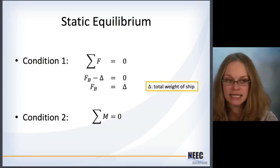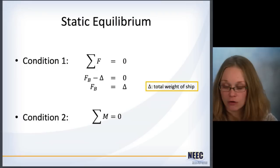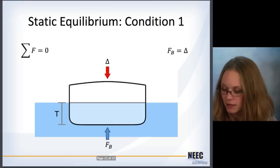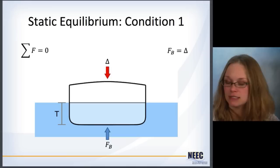Okay, so a related concept to this is that we're going to talk about static equilibrium. Static equilibrium has two conditions that need to be met. The first is that the total amount of force, the forces, needs to equal zero. In general, for the case of ships, it means that the total buoyant force is equal to the weight of the ship. The second condition is a little bit trickier. It means that the sum of the moments equals zero. And I'll explain what I mean by that.